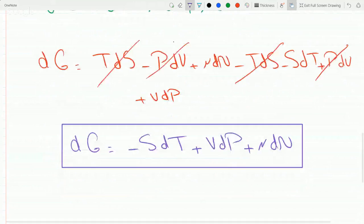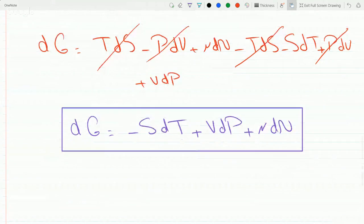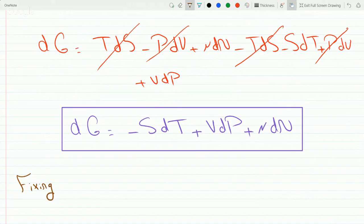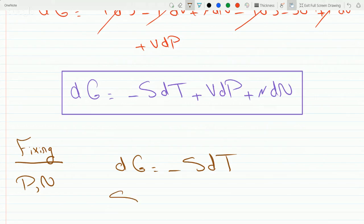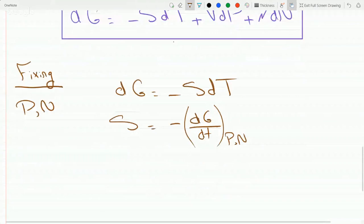Now let's get the partial derivatives that follow this. So if you fix P and N, pressure and the number of molecules, then dP will be zero and dN will be zero, so you will get dG equals minus SdT, which means S will just equal minus dG over dT at constant P and N. That's how this first one came, the partial derivative.